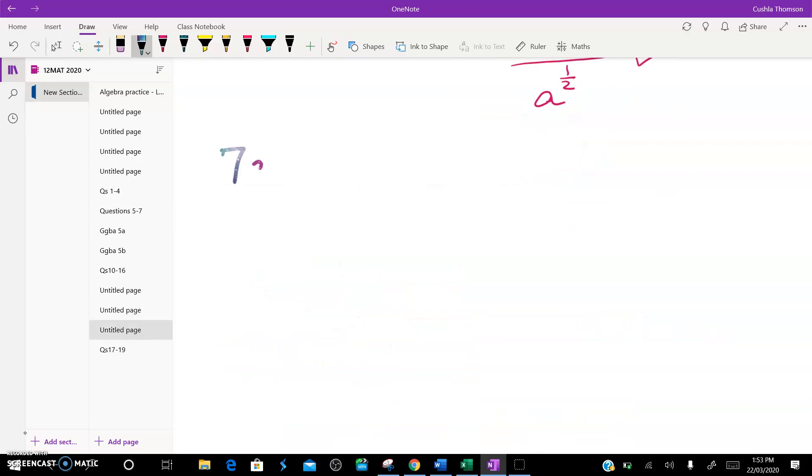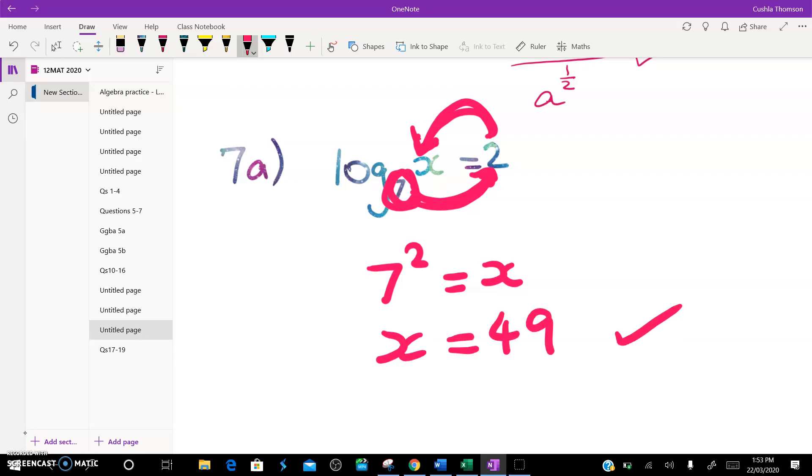The first one is this: Log to base 7 of x is equal to 2. Now I'm not teaching level 2 this year, but when I teach it, I always use this stupid thing that I call the loopy thing. So try not to laugh. It means this to the power of this equals this. And that's all there is to a log. So here, 7 squared is equal to x. 7 to the power of 2 is equal to x. x is 49. That's it.